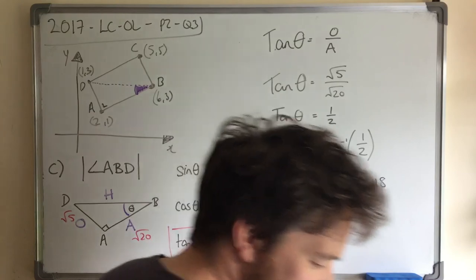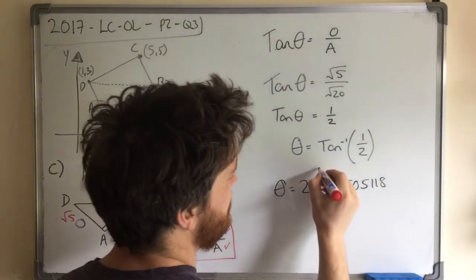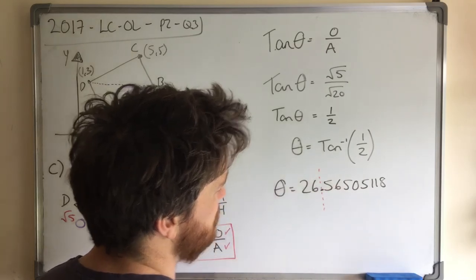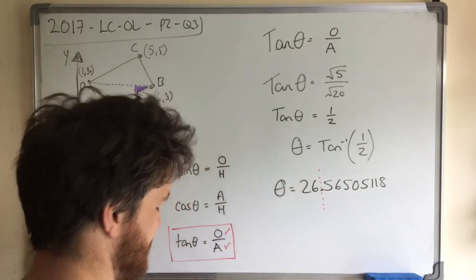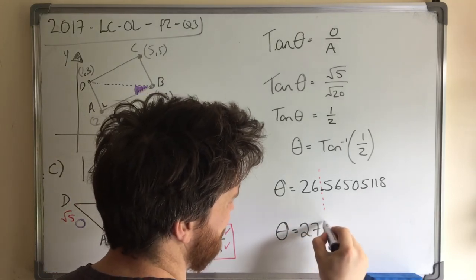And it says to the nearest degree. So let's take a look. Does that 5 round up the 6? And the answer is absolutely. So this is 27 degrees.